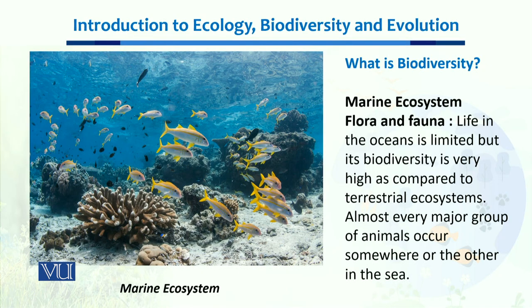Taking the example of marine ecosystems, the flora and fauna of the marine ecosystem are quite different from the land. Flora refers to plants, while fauna refers to the different animals which inhabit an ecosystem. Oceans cover more than 70% of this planet and contain enormous biodiversity — far higher than terrestrial ecosystems. Many animals from different major groups live in the sea, making it an excellent example of a rich ecosystem to study.